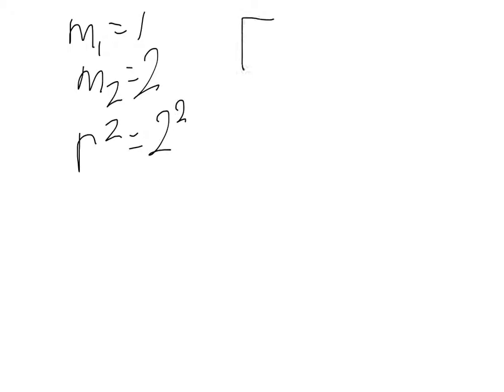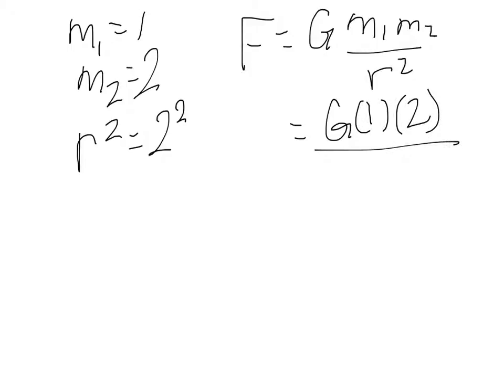We know F equals G mass one mass two over radius squared. So we've got G, mass one is one, mass two is two, radius squared is two squared. So that means it is two G over four. So we have G divided by two as our force here.